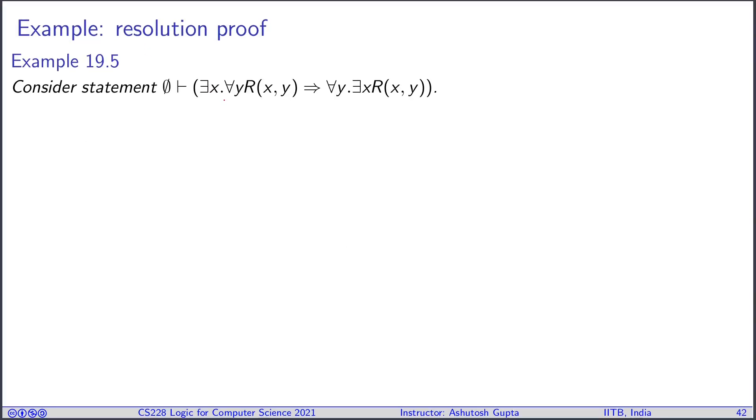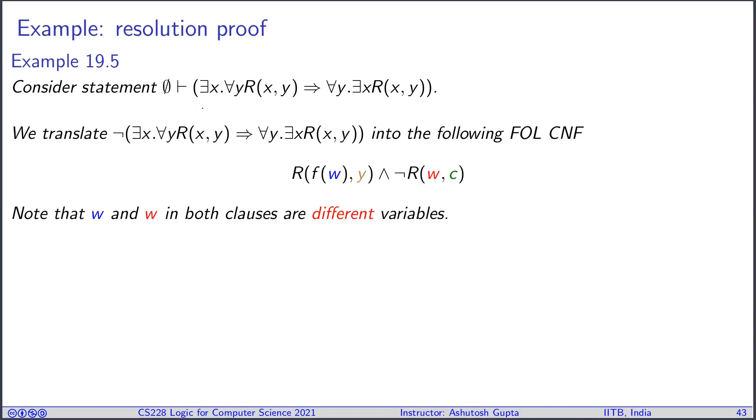Let's look at an example. Suppose you want to prove this formula to be always true. Then what do you do? You translate this formula into FOL CNF and you obtain this clause and this clause. Notice that in both clauses we have W appearing.